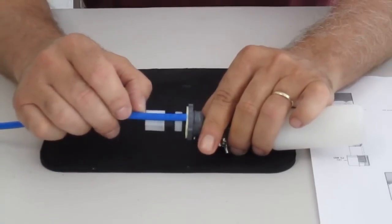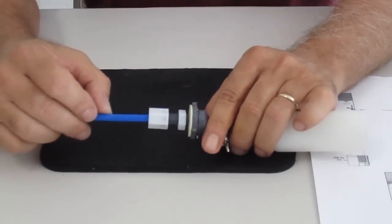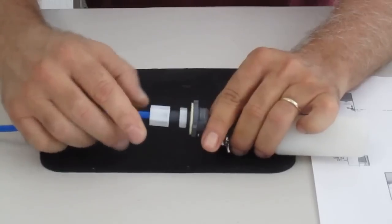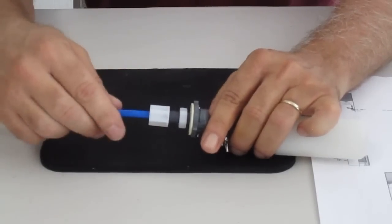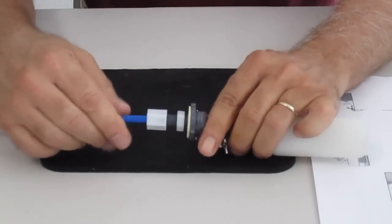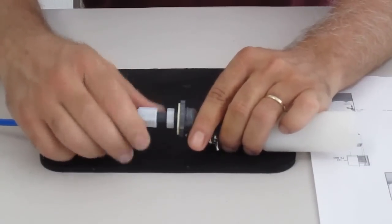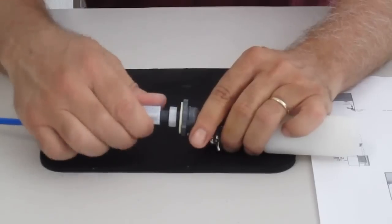We want to make sure that that goes in the whole way. If it doesn't, just simply loosen this up a little bit, shove it in the whole way till it stops, then snug down your compression nut good and tight. Just finger tight for now.